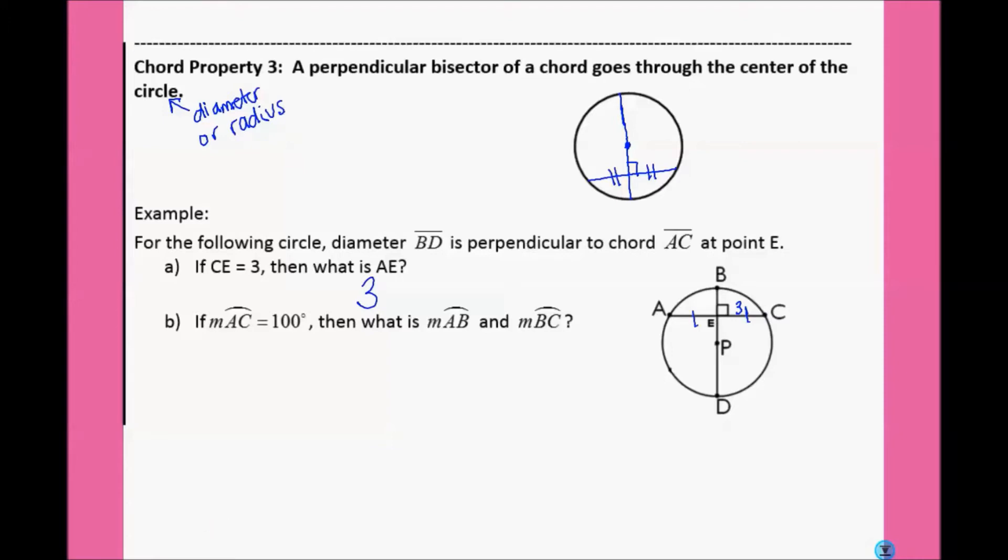Now, remember what we said earlier. In general, if the chords are the same, the arcs that intercept them are also going to be the same. So, if A to C, this whole thing here, is 100, how much is AB and BC? Well, the measure of AB is going to equal the measure of BC because they came from congruent pieces of a chord. If the whole thing is 100 degrees, then they each must be 50 degrees.